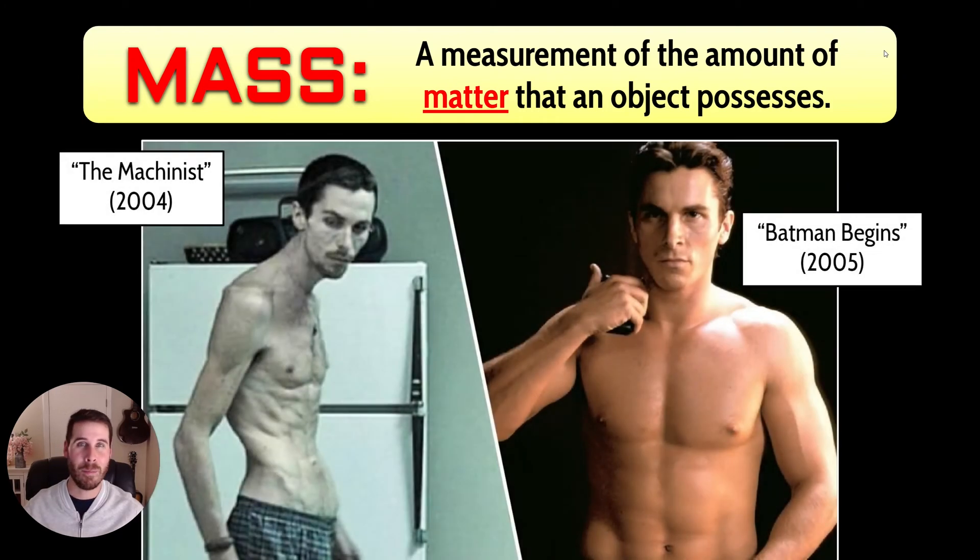Here's an example of mass in humans. This is a famous actor, Christian Bale, who is well known for changing the shape and form of his body drastically in order to play very different characters. On the left you can see his portrayal of a character in a movie called The Machinist, and then just a year later he plays Batman, Bruce Wayne, and the difference between these two characters is really drastic.